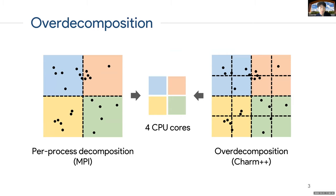There are many ways to achieve computation-communication overlap. MPI can do this by using non-blocking communication primitives and placing independent computation while the communication is going in the background. Over-decomposition is another method we can use. Basically, what it does is it allows you to overlap the computation of one subdomain with communication of another subdomain.